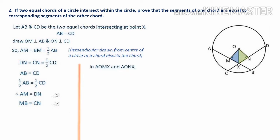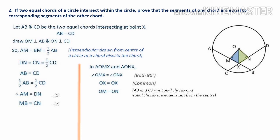Now consider triangles OMX and ONX. Angle OMX equals angle ONX — both are 90 degrees by construction. OX equals OX — common side. OM equals ON because AB and CD are equal chords, and equal chords are equidistant from the center. Therefore triangle OMX is congruent to triangle ONX by RHS congruence rule. Therefore MX equals NX — equation three.